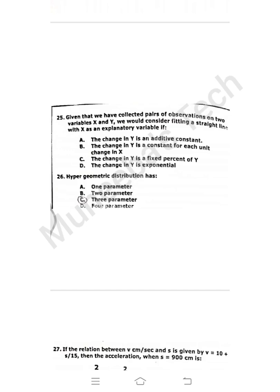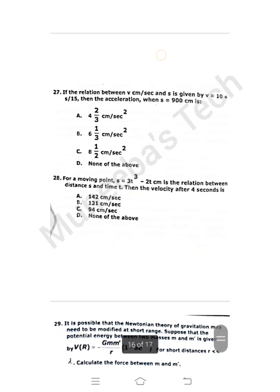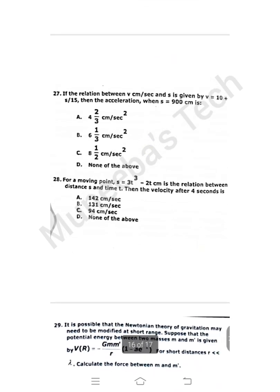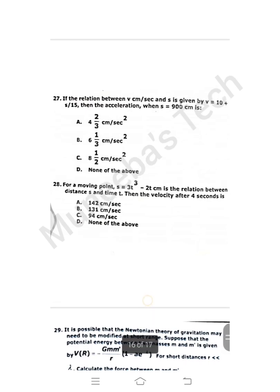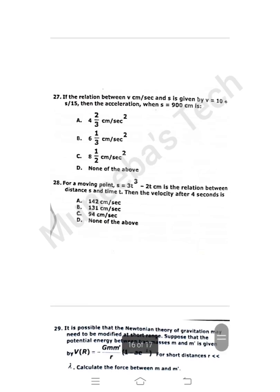Question 26: Hypergeometric distribution has three parameters. Question 27: If the relation between v (cm/sec) and s is given by v = 10 + s/15, then the acceleration when s = 900 centimeters. I didn't check this question before but I think this is quite easy. I will share its answer after solving this question, or better I will share the solution as well.